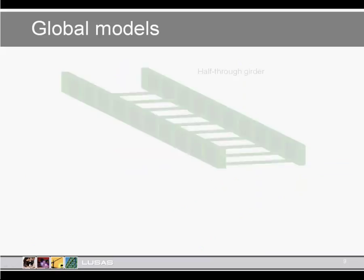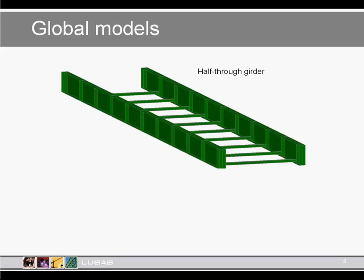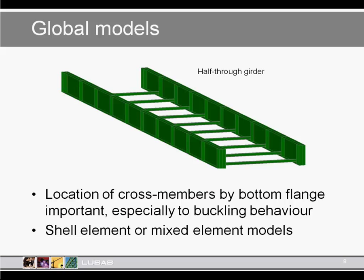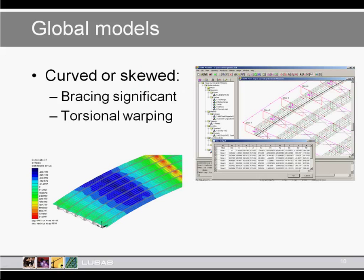Looking at half-through girders, a very different approach is normally appropriate. The interaction between the main girders and the cross girders is particularly important in this instance. Here we may model this using shells for the main girders, and a beam analogy could be sufficient for the cross girders, where we could also pick up some partial moment fixity using joint elements at their ends. For curved and skewed structures, bracing is particularly significant on the behaviour of the structure and how load is distributed, with a US Department of Transport study showing bracing effects changed bearing loads by up to 15%.